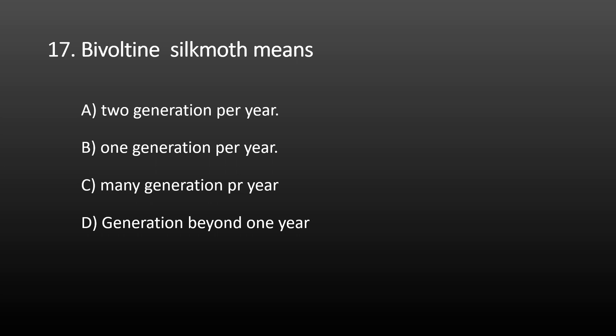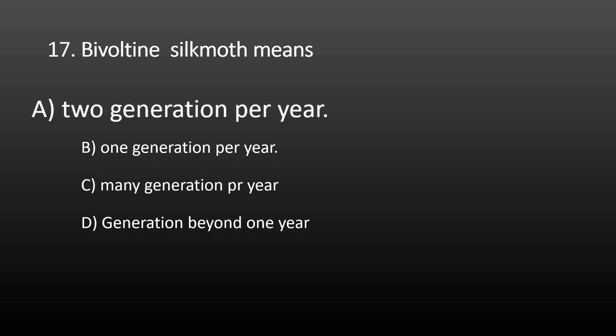Next MCQ: bivoltine silk moth means? Options are: 2 generations per year, 1 generation per year, many generations per year, and generations beyond 1 year. Silk moths are classified into univoltine, bivoltine, and multivoltine. Univoltine completes 1 generation per year. Bivoltine means 2 generations per year, which is the correct option. Multivoltine means many generations per year. Generations beyond 1 year refers to semi-voltine.